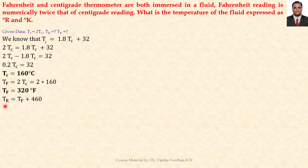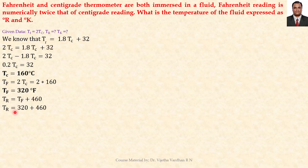The Rankine scale is given by: R = 460 + Tf, which was obtained earlier in our scales of thermodynamics session. Using this equation with the Fahrenheit value of 320, adding 460 gives the Rankine scale temperature as 780 degrees Rankine.